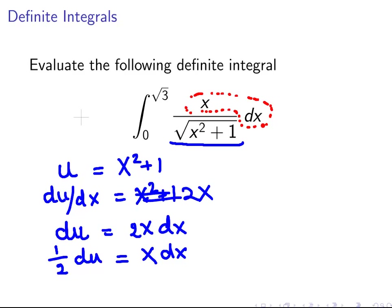So now we can just disregard the limits for the time being. So we can re-express the whole thing there as something over the square root of u. x dx, so that is 1 half, times du.